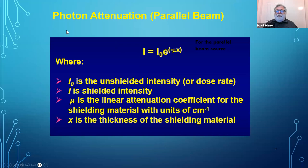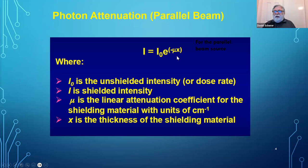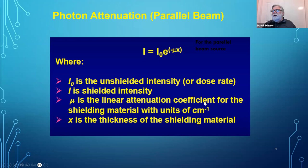Here is the basic formula for a parallel photon beam. The intensity coming out at the exit side of the material is equal to the incident intensity times e to the minus μx. X is the thickness of the material, μ is the linear attenuation coefficient — that's the fraction of photons removed per unit path length. We use the attenuation coefficient for shielding because we want to know how much of the photon beam is removed, not how much energy is deposited in the material.